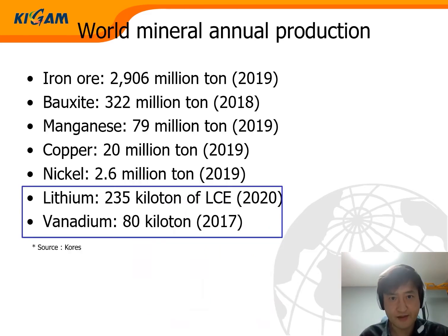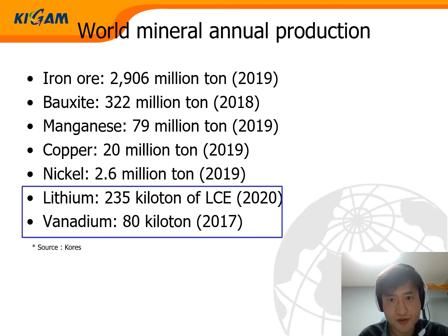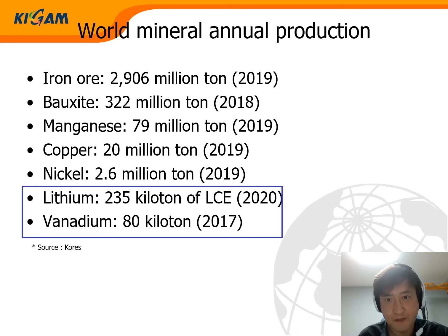This slide shows world mineral annual production. The supply risk of lithium and vanadium is due to small production compared to other metallic minerals. As you can see, lithium and vanadium had been produced as a byproduct usually. So we have decided to focus on three battery minerals — vanadium, lithium, and graphite — which have high possibility to be developed geologically in Korea.